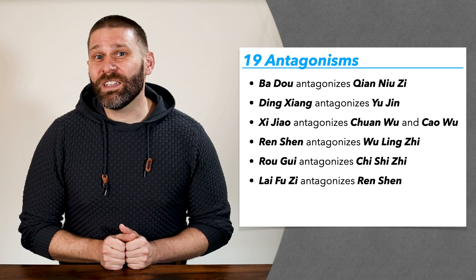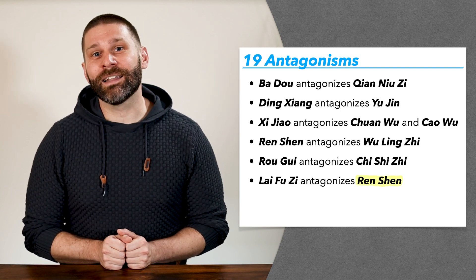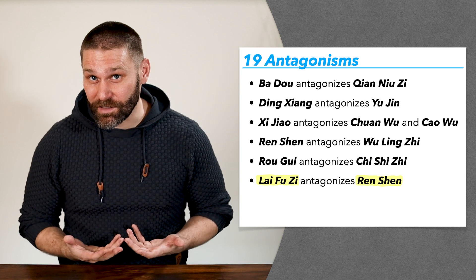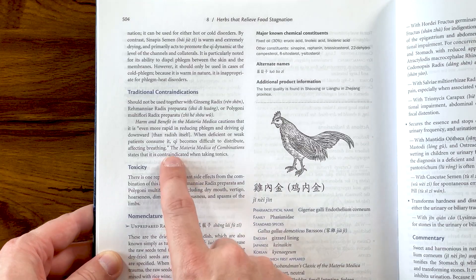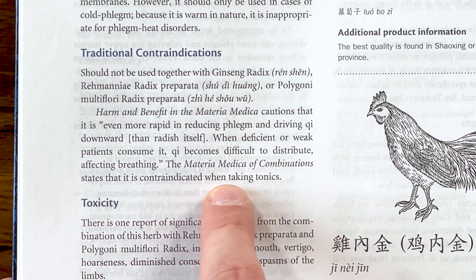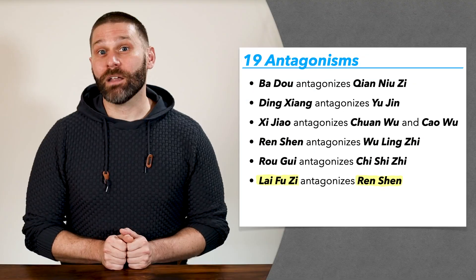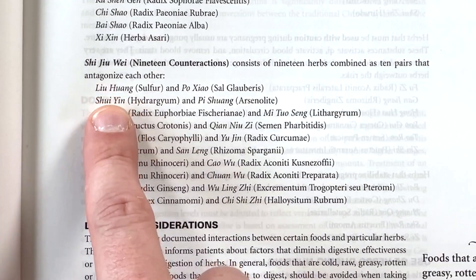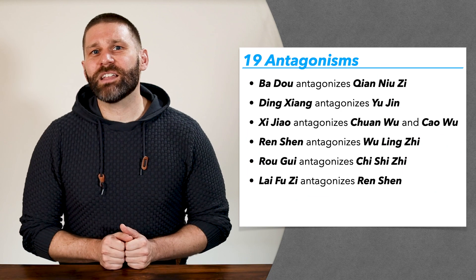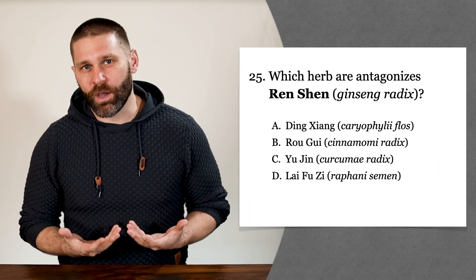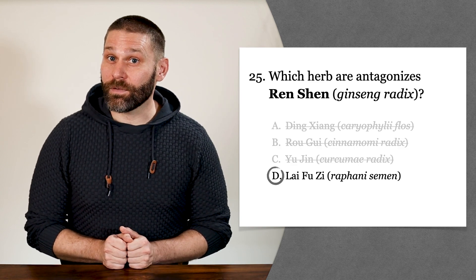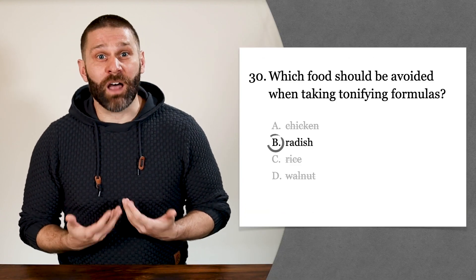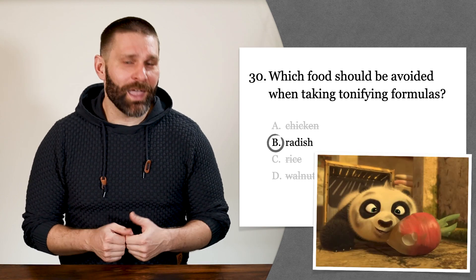An additional one worth noting is Ren shen (ginseng radix) and Lyfuzza (radish seed). As far as I know, this is not on the traditional list of the 19 antagonisms. But the materia medica of combinations states that Lyfuzza is contraindicated when taking tonics, and other sources flat out say Lyfuzza antagonizes the tonic effect of Ren shen. So even though it's not officially one of the 19 antagonisms, I have seen questions about this — either that Lyfuzza will cancel out the tonifying effects of Ren shen specifically, or that a patient taking a tonifying formula should avoid Lyfuzza or radishes in general.